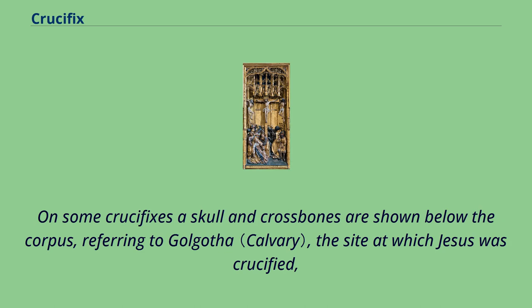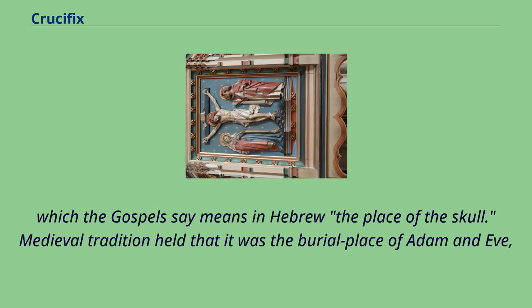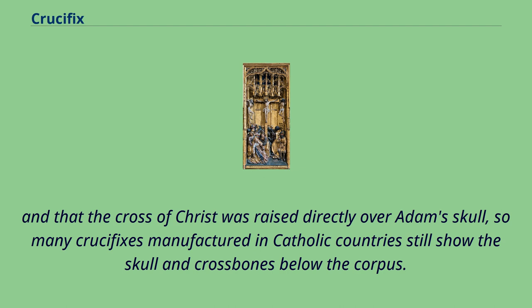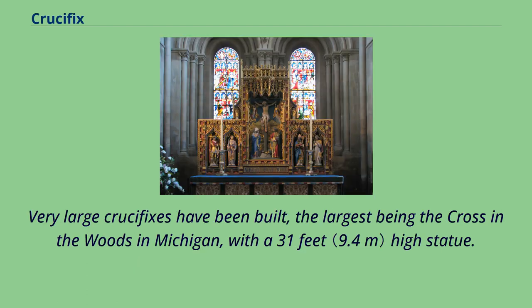On some crucifixes a skull and crossbones are shown below the corpus, referring to Golgotha, the site at which Jesus was crucified, which the Gospels say means in Hebrew the place of the skull. Medieval tradition held that it was the burial place of Adam and Eve, and that the cross of Christ was raised directly over Adam's skull, so many crucifixes manufactured in Catholic countries still show the skull and crossbones below the corpus. Very large crucifixes have been built, the largest being the Cross in the Woods in Michigan, with a 31-foot-high statue.